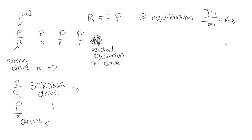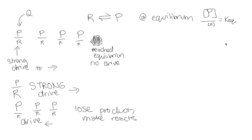Basically, what's going to happen is you're going to lose product and make reactants. That's true no matter how favorable it seemed originally. No matter how inherently favorable that reaction might seem, if you start with more of the products than you would have at equilibrium, now you're going to go backwards.